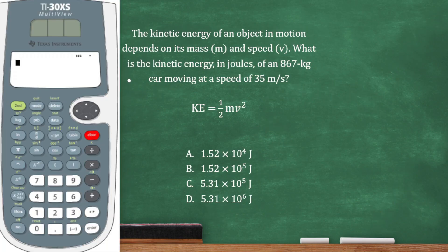The kinetic energy of an object in motion depends on its mass m and speed v. What is the kinetic energy in joules of an 867-kilogram car moving at a speed of 35 meters per second? They give us the formula here, so let's go ahead and plug everything in.